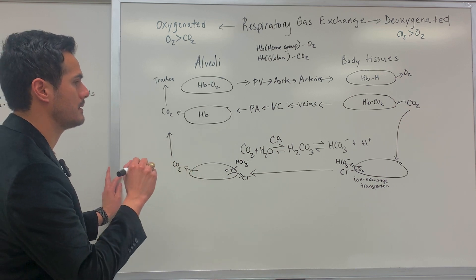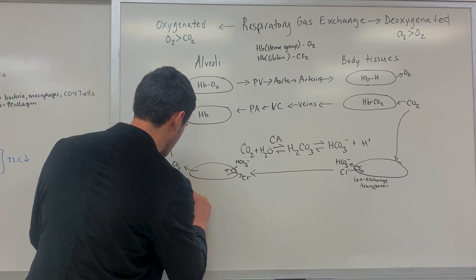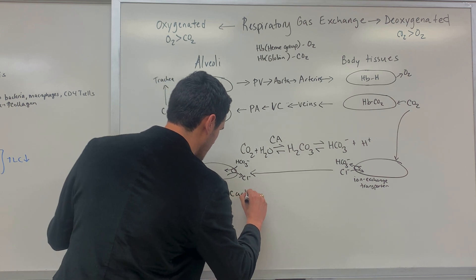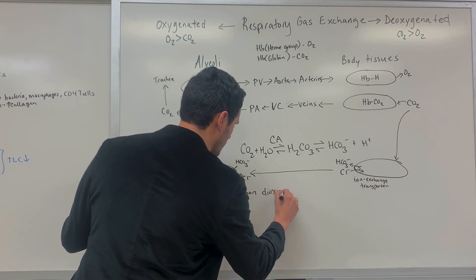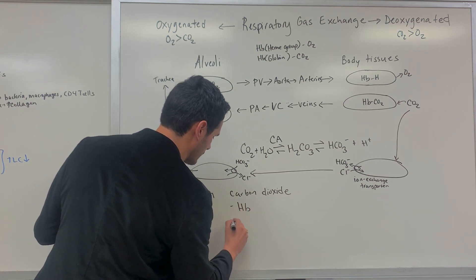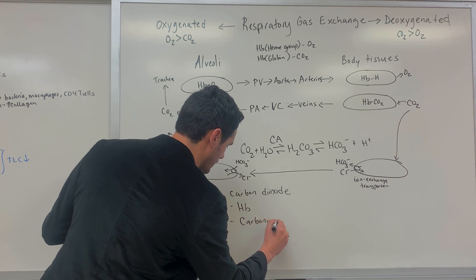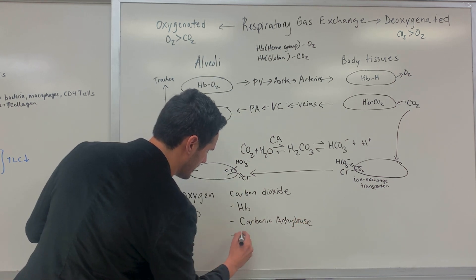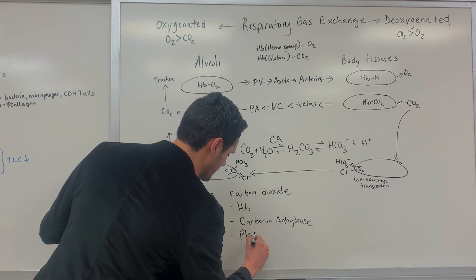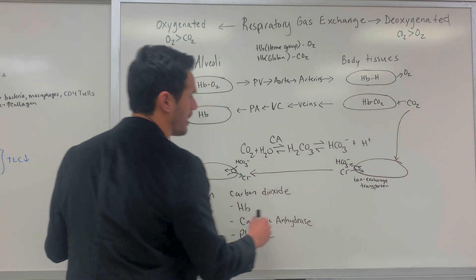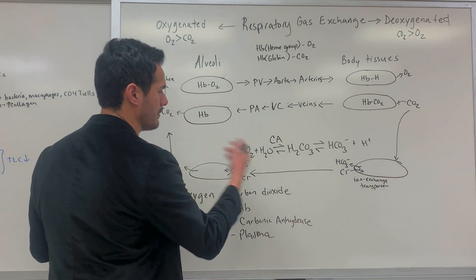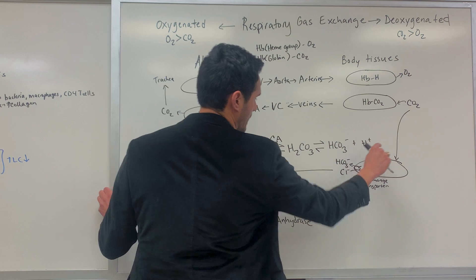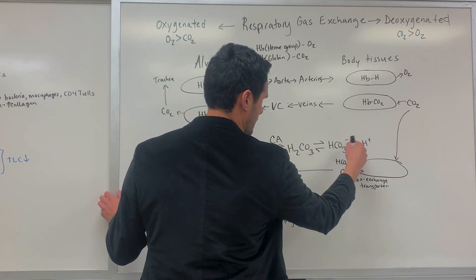Let's summarize the different transport mechanisms. Oxygen is mainly transported using hemoglobin. Carbon dioxide has a couple of mechanisms: it can use hemoglobin, it can also use carbonic anhydrase, and the last mechanism is transport through the blood plasma — though this is a slow process because there's no carbonic anhydrase in the plasma. Within the red blood cell, the conversion of CO2 into carbonic acid and then into bicarbonate ion happens rapidly.